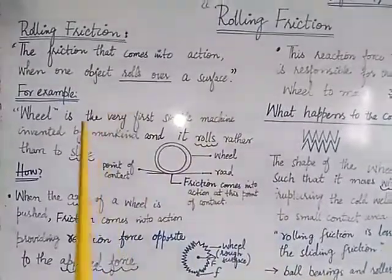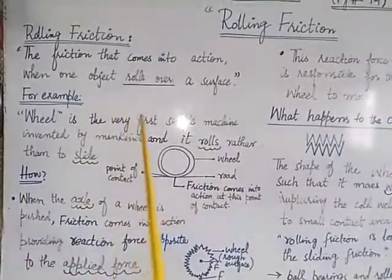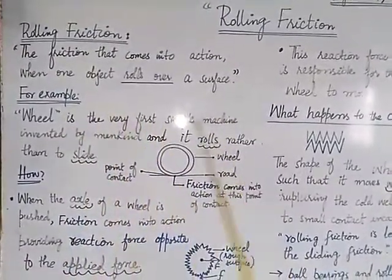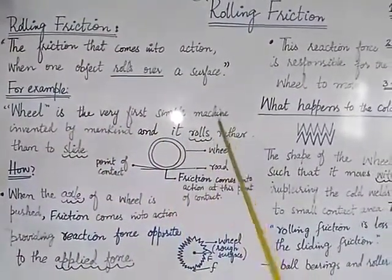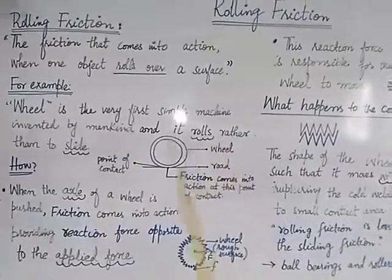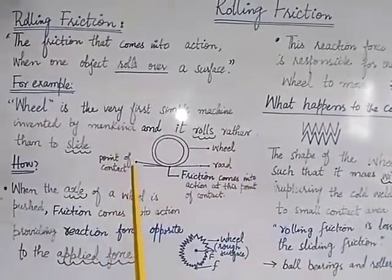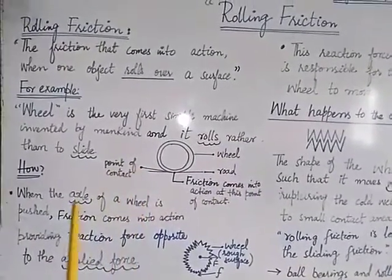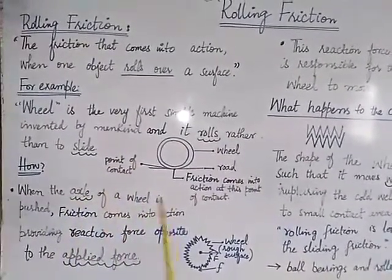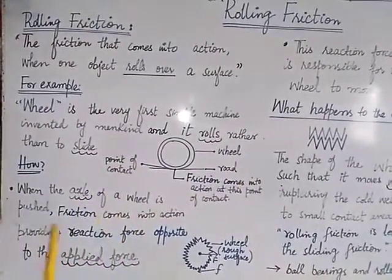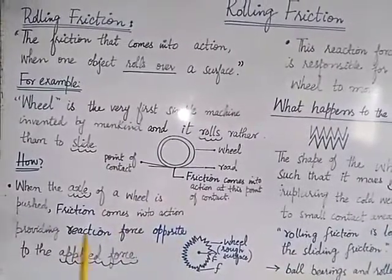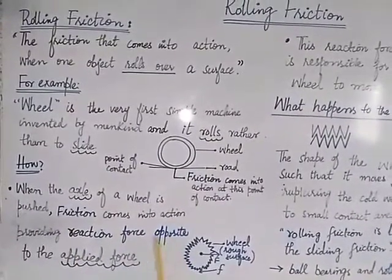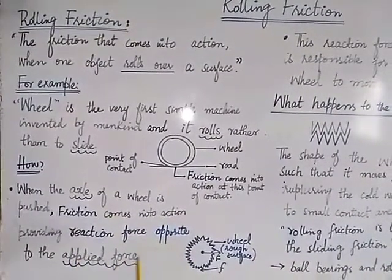For example, the wheel is the very first simple machine invented by mankind and it rolls rather than slides. When the axle of the wheel is pushed, friction comes into action providing a reaction force opposite to the applied force.